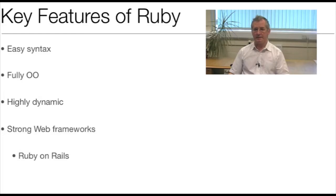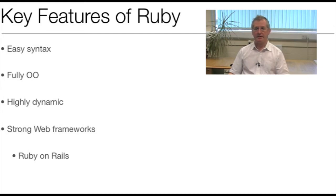Everything in Ruby is an object. There are no primitive types, no need to wrap primitive types up as objects. Everything — an integer, a string, for example — is an object right from its point of creation in a piece of code. And that gives you a lot of advantages because they have methods associated with them straight away, so you can operate on strings, you can operate on integers, you can do things.